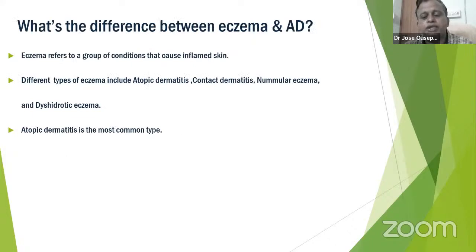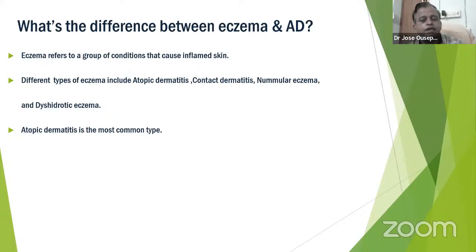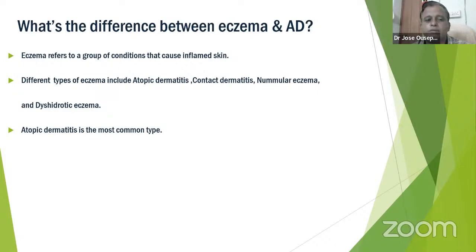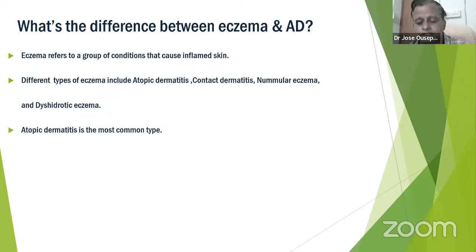Before going into the topic of Atopic Dermatitis itself, how would you differentiate between eczema and Atopic Dermatitis? Eczema refers to a group of conditions that cause inflamed skin. Different types of eczema include Atopic Dermatitis, Contact Dermatitis, Nummular Eczema, and Dyshidrotic Eczema. Atopic Dermatitis is the most common type of eczema in the population.